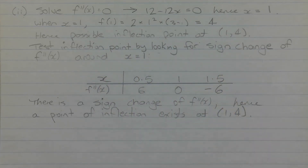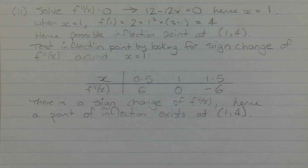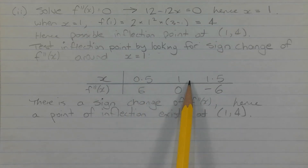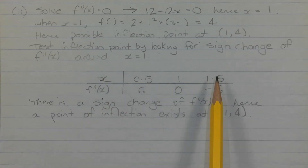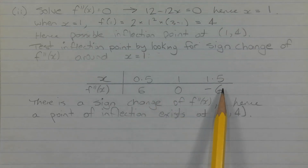We need to confirm this is an inflection point by checking for a sign change of f''(x) around x = 1. At x = 1, f''(x) = 0. Testing x = 0.5 gives f''(0.5) = +6 (positive), and testing x = 1.5 gives f''(1.5) = −6 (negative). There is a sign change of the second derivative around x = 1, confirming that (1, 4) is a point of inflection.